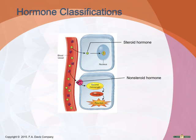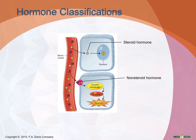Hormones are classified as either steroid or non-steroid. Steroid hormones are made from cholesterol; non-steroid hormones are protein-based, made from amino acids. Steroid hormones pass easily through the cell membrane and bind to receptors in the nucleus. Non-steroid hormones are too large to penetrate the cell wall, so they bind to receptors on the cell surface, activating the second messenger system. This cascade of processes results in production of a second messenger that activates specific enzymes, producing the cell's response.